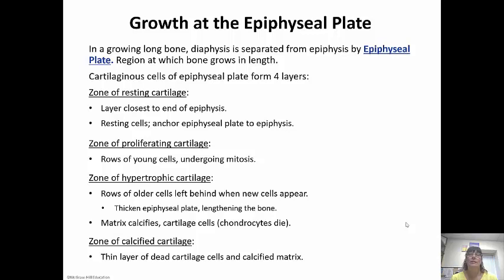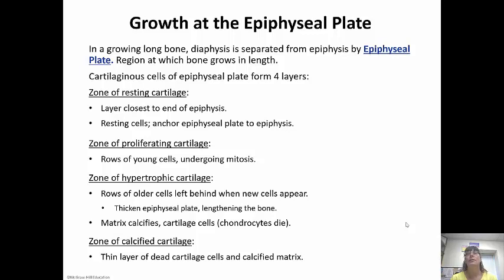Cartilaginous cells form four different layers in the epiphyseal plate. The zone of resting cartilage is the layer closest to the epiphysis — these resting cells anchor the plate to the epiphysis. The zone of proliferating cartilage contains young cells still undergoing mitosis. The zone of hypertrophic cartilage contains older cells left behind as new cells appear; the plate thickens and the bone gets longer. Finally, the zone of calcified cartilage is a thin layer of dead cartilage cells and calcified matrix.